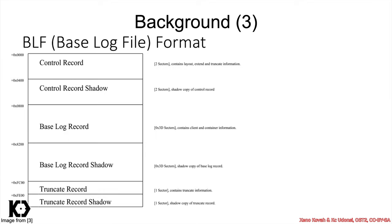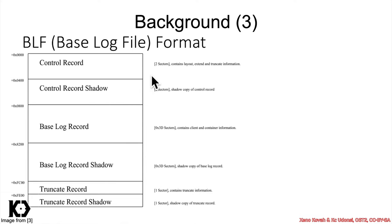Just to help you visualize that — because the upcoming code is going to be pretty complex and confusing since it's all decompiled — you can think of it as a base log file containing the control record and its shadow, the base log record and its shadow, and the truncate record and its shadow. So you're going to see six things in an array in these data structures, and those six things correspond to these six types.